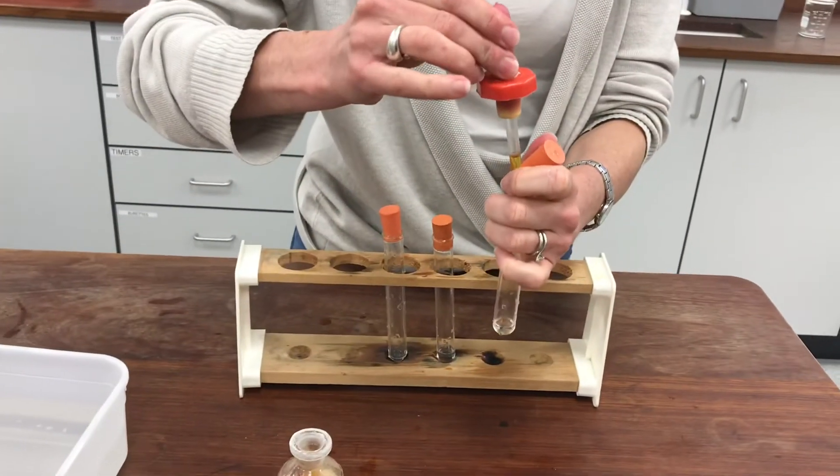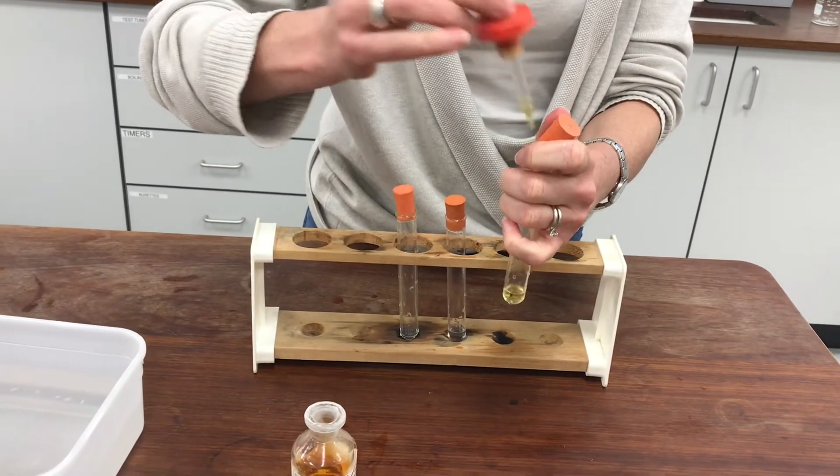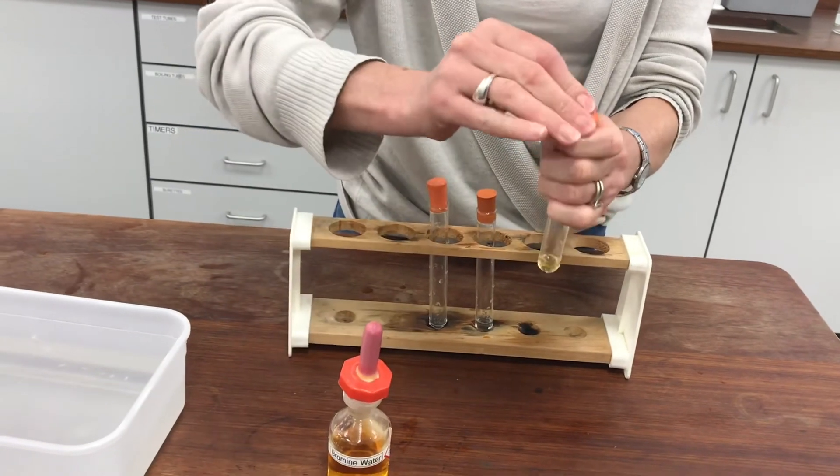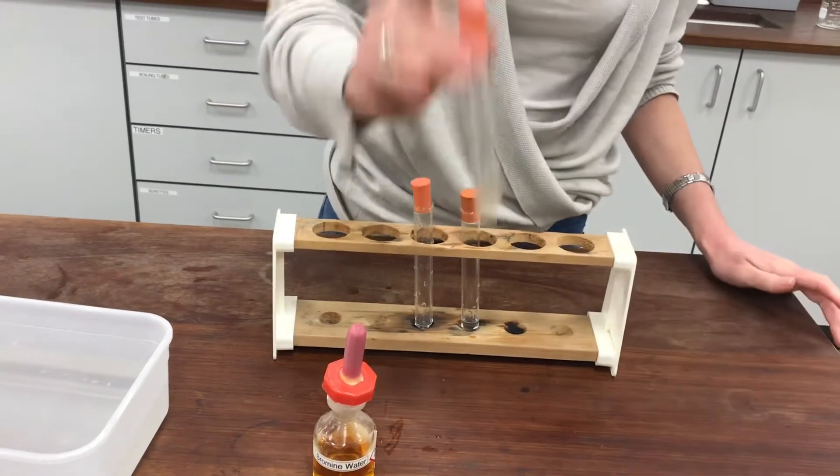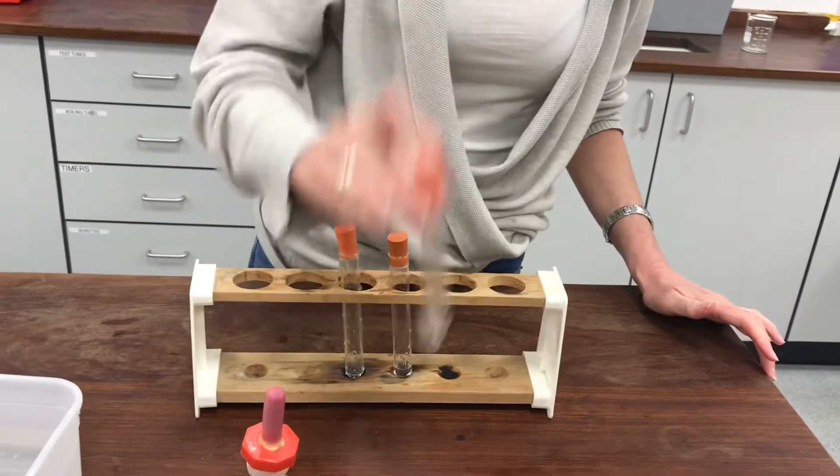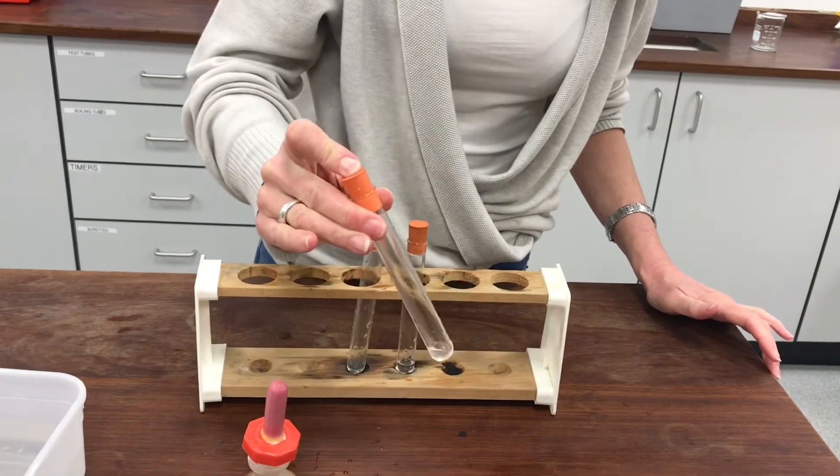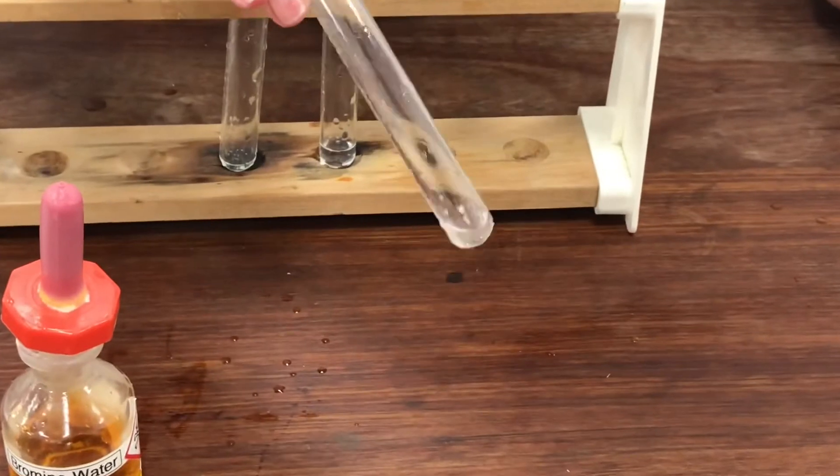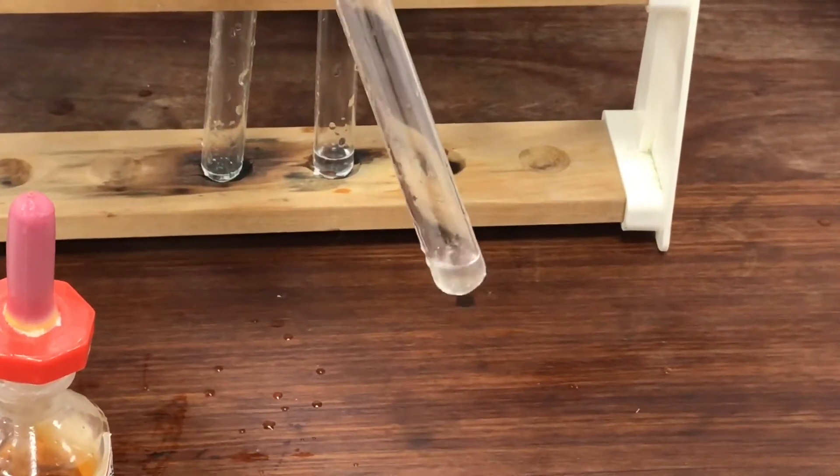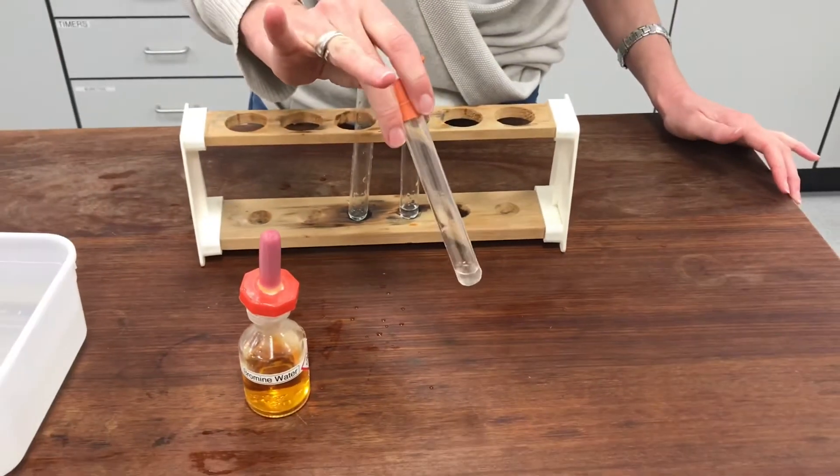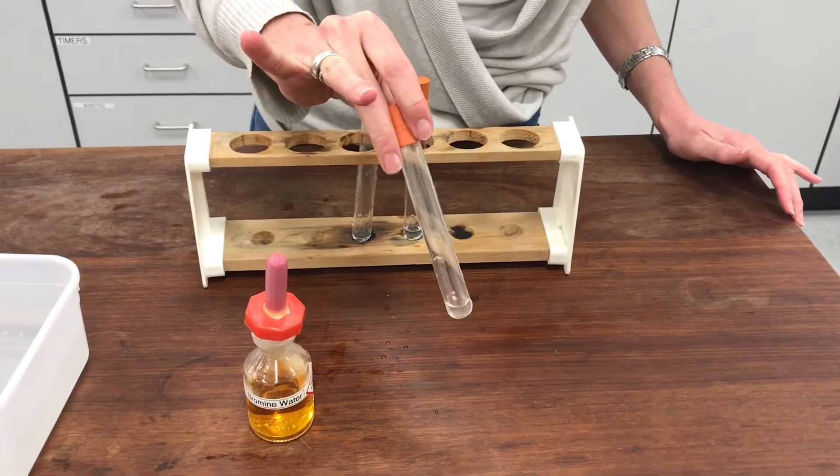A little bit of bromine water in there. And then I'll give it a good shake up so the gas gets a chance to react with the bromine. And I hope you can see that that orange colour of the bromine has completely gone. Which means it's not behaved as an alkane at all. It's something different in there.